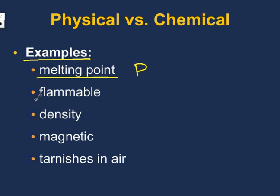Let's look at the next one: flammable. If you catch something on fire, is it staying the same thing or is it turning into something entirely new? Let's think about wood — if you take a piece of wood and catch it on fire, it gets turned into ash. Is ash the same thing as wood? Is it the same substance? No. So that would be a chemical property.